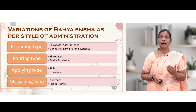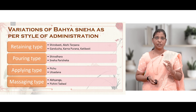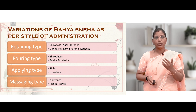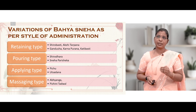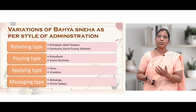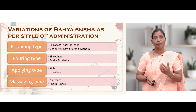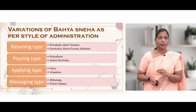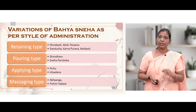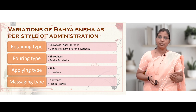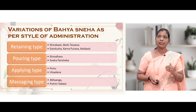Variations of Bahya Sneha by style of administration: retaining type includes Shiro Basti, Akshi Tarpana, Gandusha, Karnapurna, and Kati Vasti; pouring type includes Shirodhara and Sneha Parisheka; applying type includes Pichu and Utsadana; and massaging type includes Abhyanga and Parisheka Tadwal.